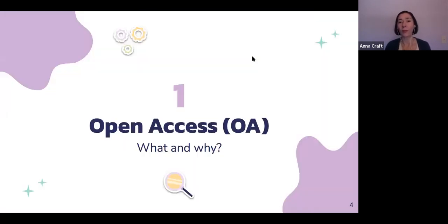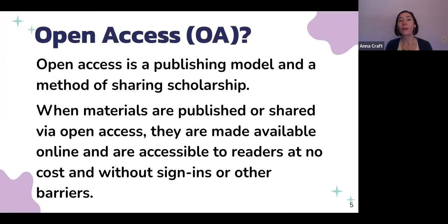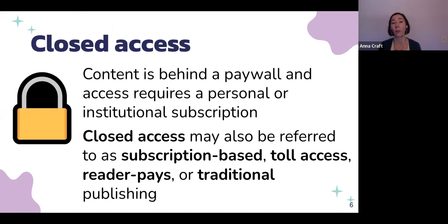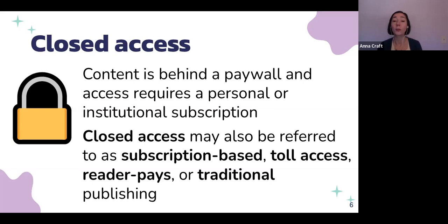Open access is a publishing model, but it's also a method for sharing scholarship — it can be both. When materials are published or shared through open access, they're made available online and anyone can access them with no cost, no sign-ins, no other barriers. This is the opposite of closed access, which is the more traditional model. In closed access, content is behind a paywall requiring a subscription — sometimes an institution like a library paying for it, sometimes an individual. Closed access also goes by other names: subscription-based, toll access, reader pays, or traditional publishing.